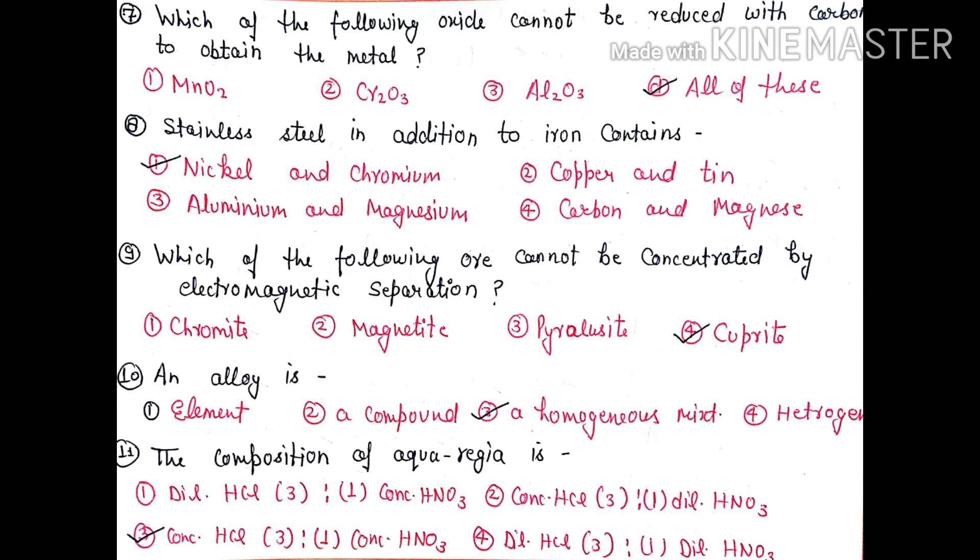Question 8: Stainless steel in addition to iron contains - iron, nickel, and chromium are mixed together to make this alloy. That's why the answer is nickel and chromium. Question 9: Which of the following ore cannot be concentrated by electromagnetic separation? Cuprite is right.